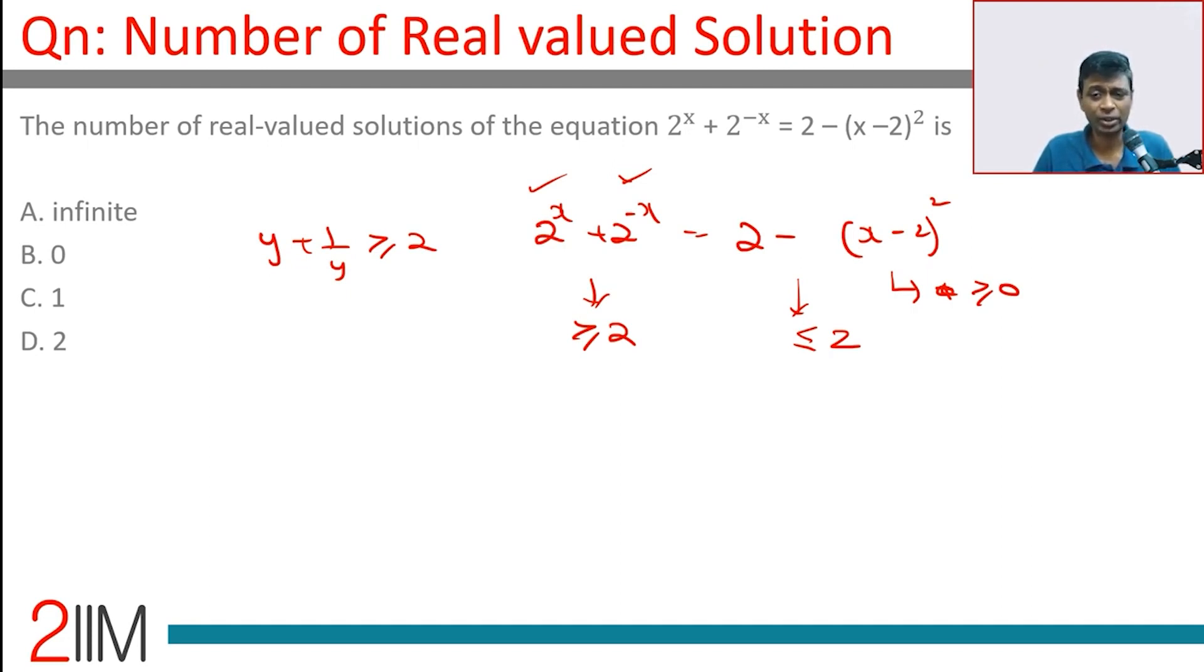This has to be greater than or equal to 2, that has to be less than or equal to 2. The only possibility is if both are equal to 2. This will be equal to 2 when x is 0. Put x equal to 0: 2^0 + 2^(-0) = 2. But if you put x equal to 0 here, we get 2 - (0-2)^2 = 2 - 4 = -2. Doesn't work.